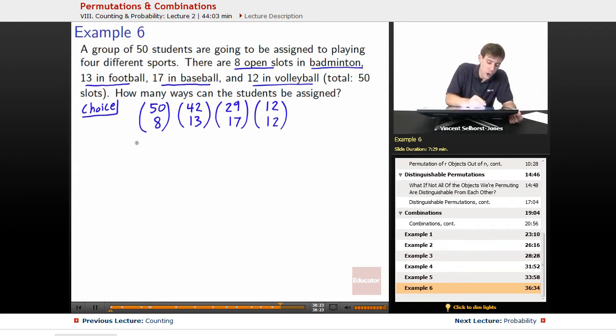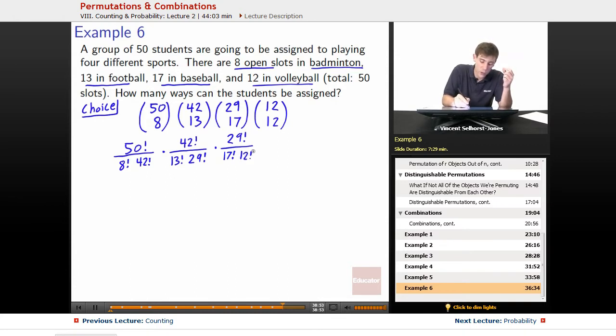And we work this out with what these mean mathematically. 50 choose 8 is 50 factorial over 8 factorial times 50 minus 8, so 42 factorial. Next up, times 42 factorial divided by 13 factorial times 42 minus 13 factorial, so that comes out to be 29 factorial. Next one is times 29 factorial divided by 17 factorial, 29 minus 17, 12 factorial times 12 factorial divided by 12 factorial times 0 factorial. 12 minus 12 gets a 0.